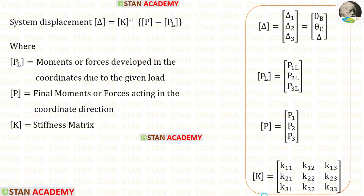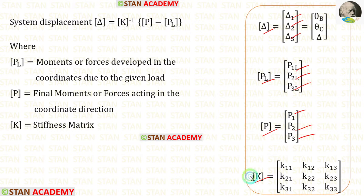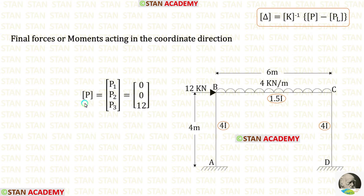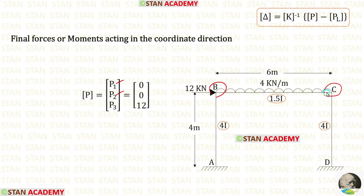We know the formula to find the displacements: the delta matrix equals K matrix inverse times the quantity P matrix minus PL matrix. In this analysis there are three coordinates, so inside the delta matrix, PL matrix, and P matrix there will be three values. The size of the stiffness matrix will be 3×3, meaning three rows and three columns. Now let us find the P matrix. Inside the P matrix we will have the final forces or moments acting in the coordinate direction. To find P1 and P2, we check points B and C for any moments — there are no external moments, so P1 and P2 will be 0.